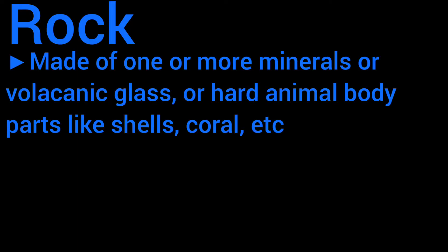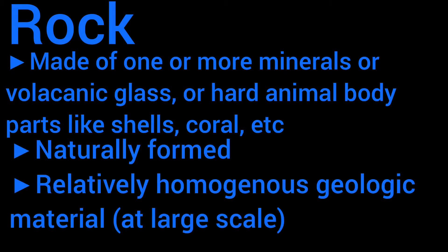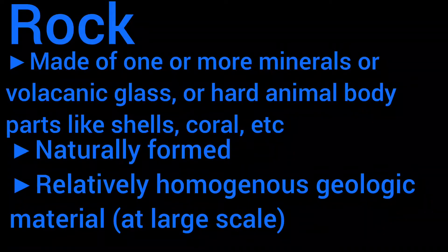A rock can be made of one or more minerals. It can be made of glass. It can be made of hard animal body parts, like shells, coral, fossils. It has to be naturally formed, and it has to be relatively homogenous geologic material at the large scale. In other words, it doesn't have to have a definitive crystalline structure or a definitive chemistry — it can vary a bit.